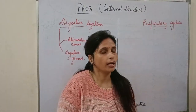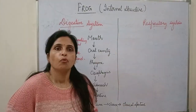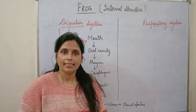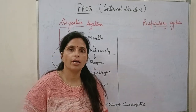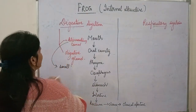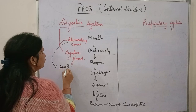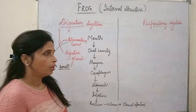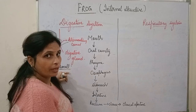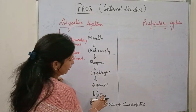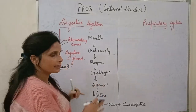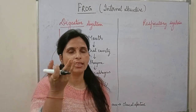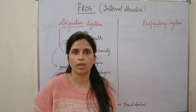If we talk about the alimentary canal in case of frog — frog is a carnivore animal. That's why the frog's alimentary canal is smaller compared to any herbivore animal. The intestine is small in carnivore animals, and that's why their alimentary canal is small.